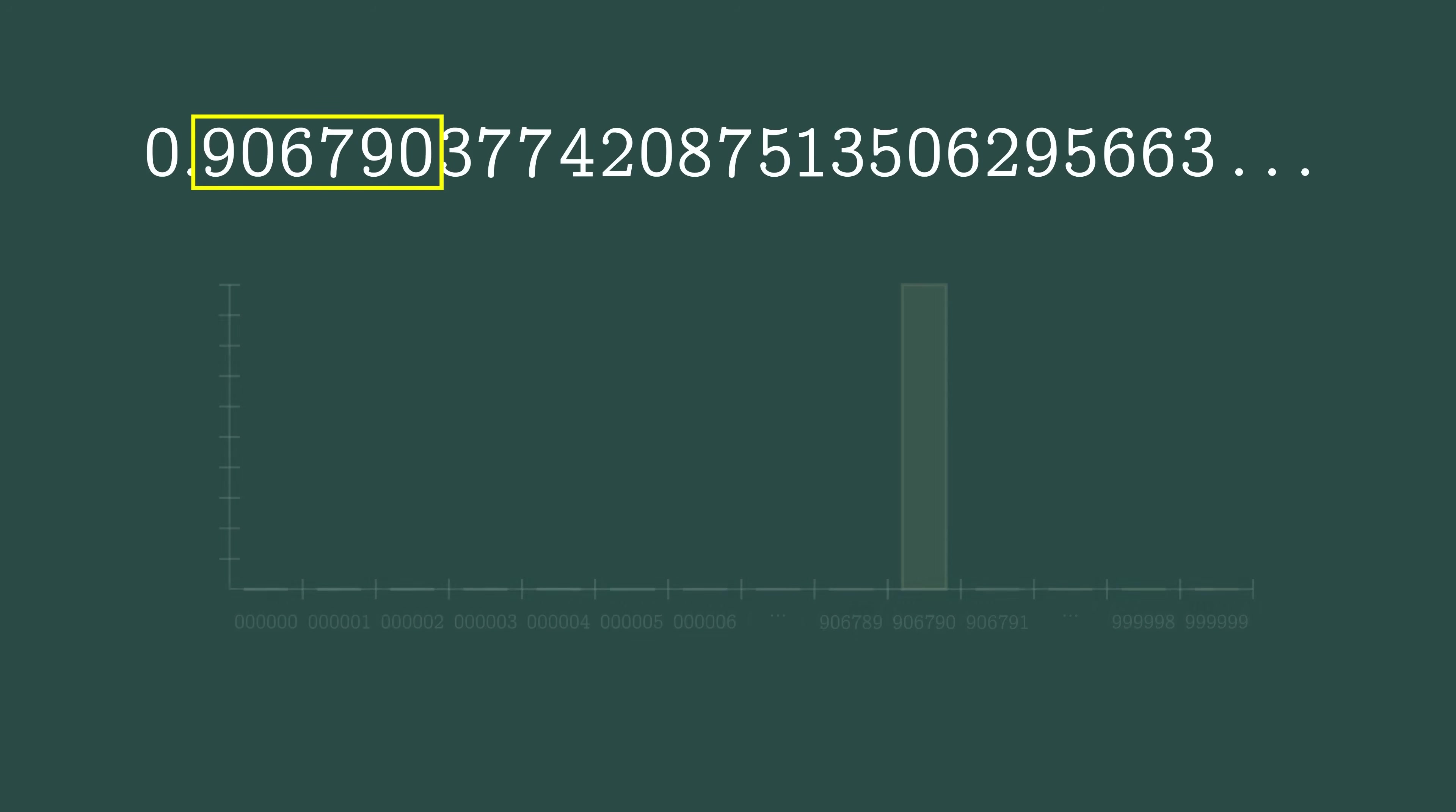This is true for any window size. If it shows six digits in a row, you will see each of the 1 million possibilities the same fraction of the time.